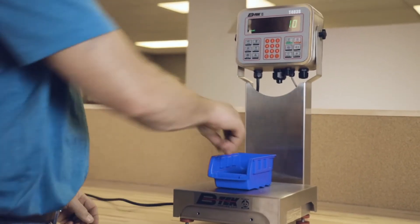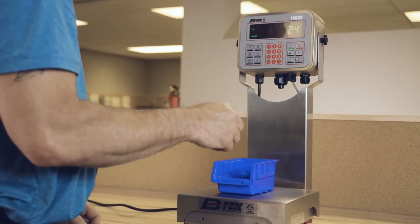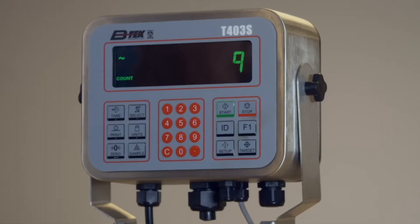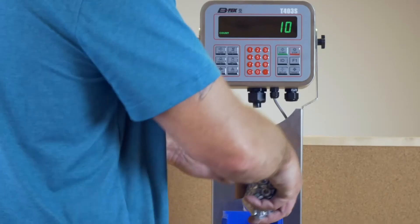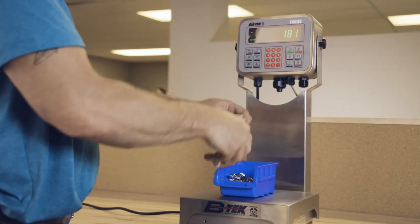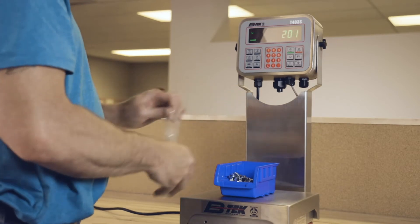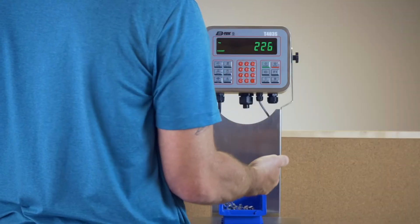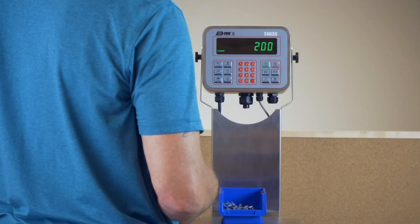Counting products is quick and accurate. Simply enter the number you would like to sample, then add pieces to capture the average piece weight. To begin counting, add or remove the parts that were just sampled. The AquaShield stack light can be used with this application as well, when configured as check counting.